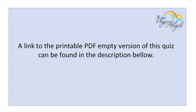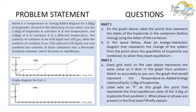So this is the problem we're going to be working with. We have a temperature versus energy added diagram for one kilogram of kryptonite substance A at one temperature, and one kilogram of kryptonite substance B at a different temperature. The contents of container A are 67% liquid and 33% gas; B is 75% solid and 25% liquid. Lex combines both kryptonites together and it all comes to equilibrium.